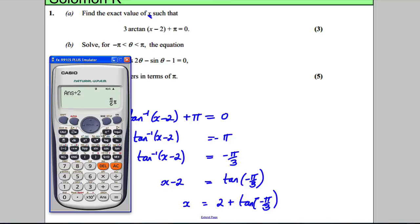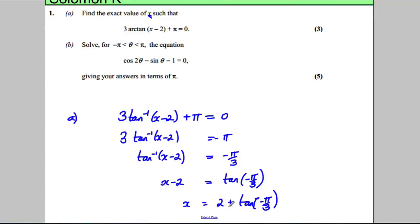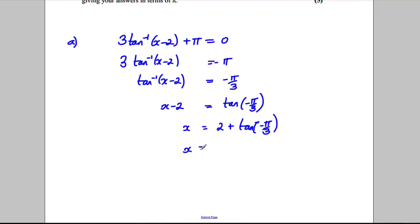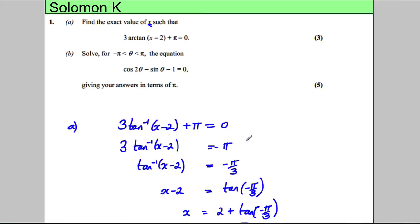Now calculator out, tan of negative pi over 3 gives me negative root 3. So this here, X is going to be equal to 2 subtract negative root 3 and I'm done. That's the exact value.